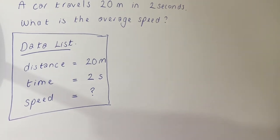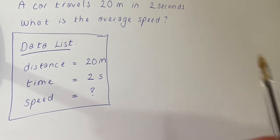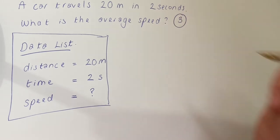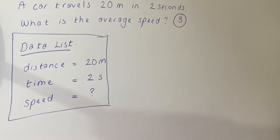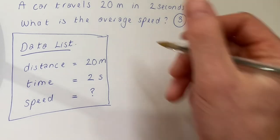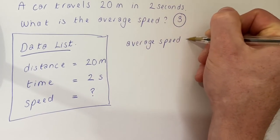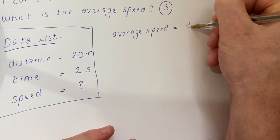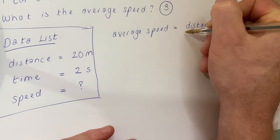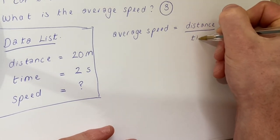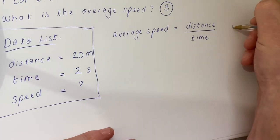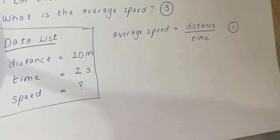So in science, when you get a question like this, it will usually be worth three marks. I'm going to show you how you get all three marks for this question. The first mark is simply for writing down the correct equation. So the equation for this is average speed equals distance divided by time. And that would get you one mark just for writing the equation.